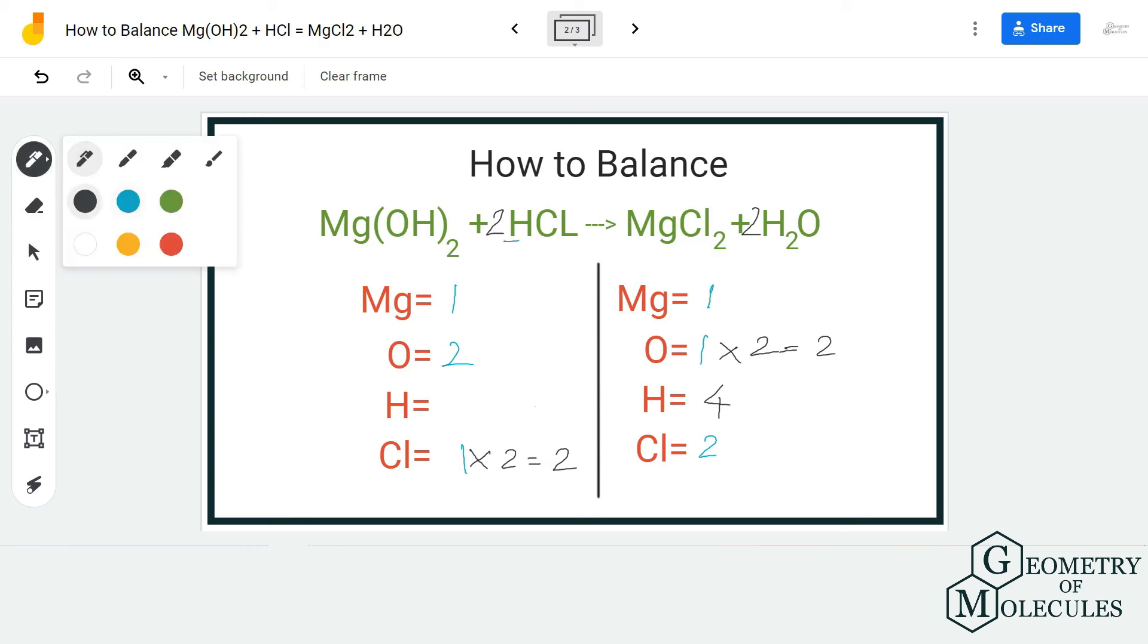Now we have two plus two equals four hydrogen atoms over here. So if you check, we have one atom of magnesium on both sides, two atoms of oxygen on both reactant and product side, four atoms of hydrogen, and two atoms of chlorine.